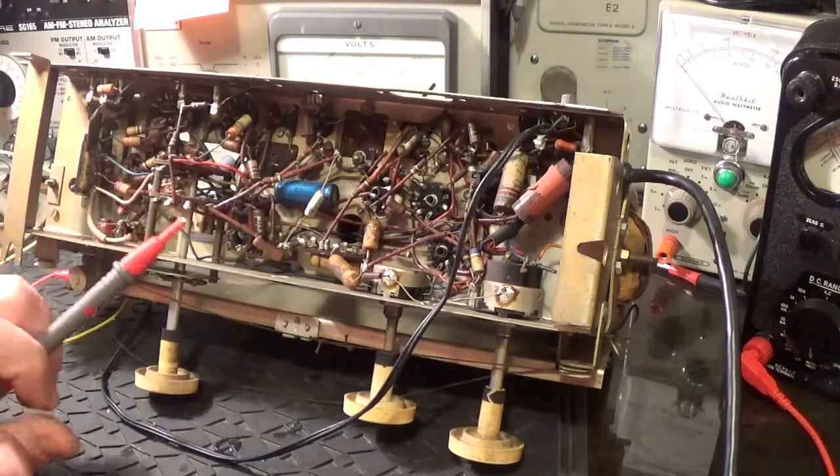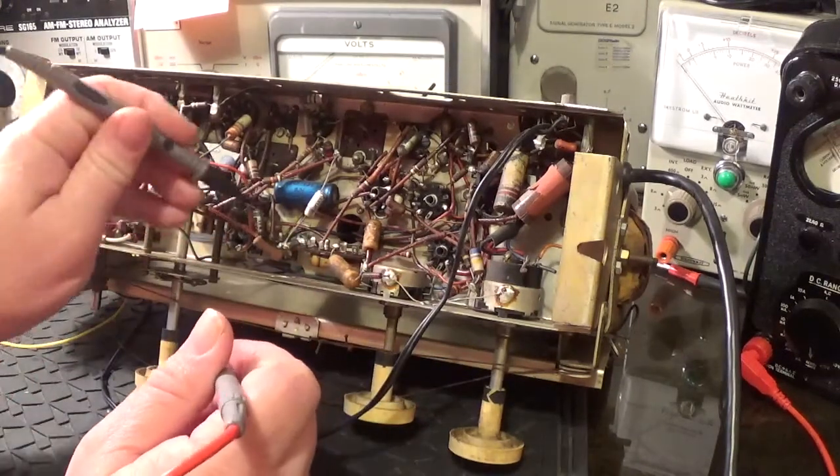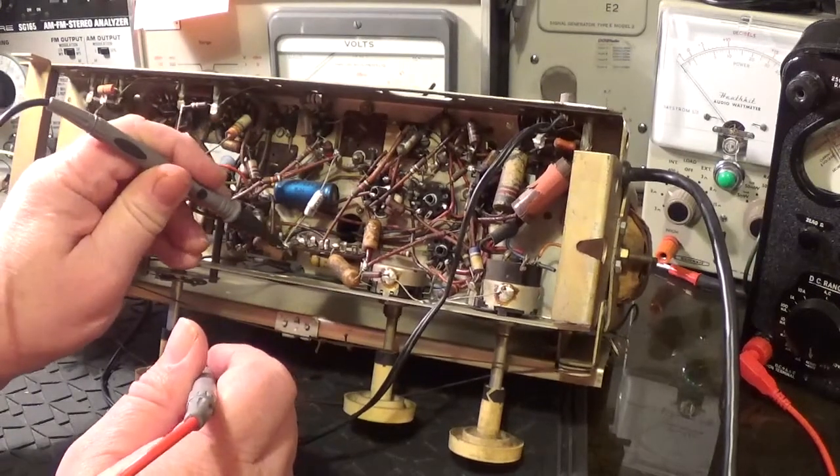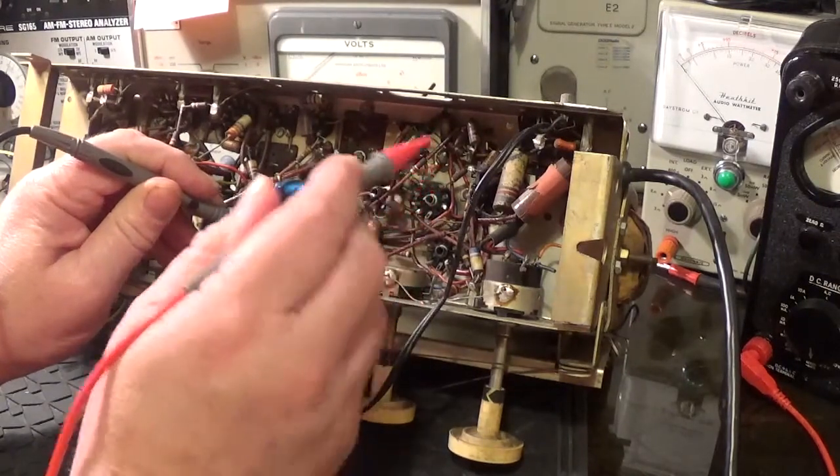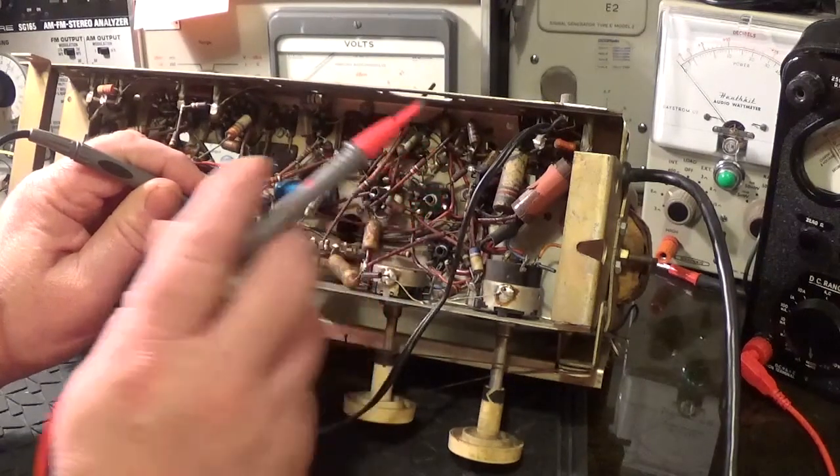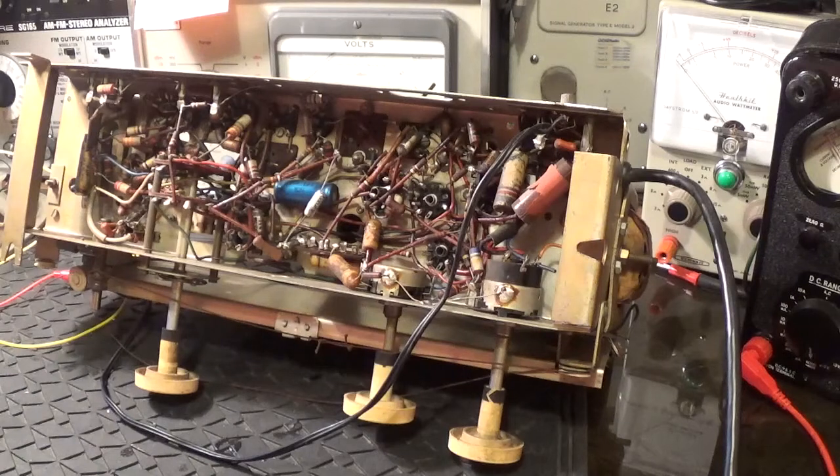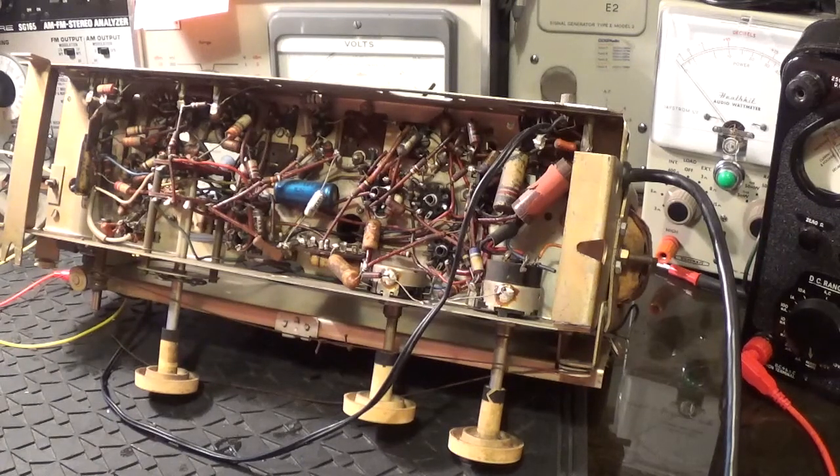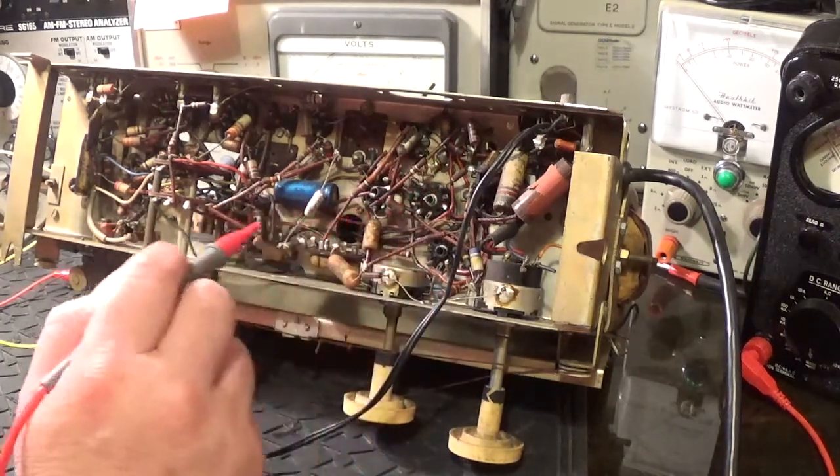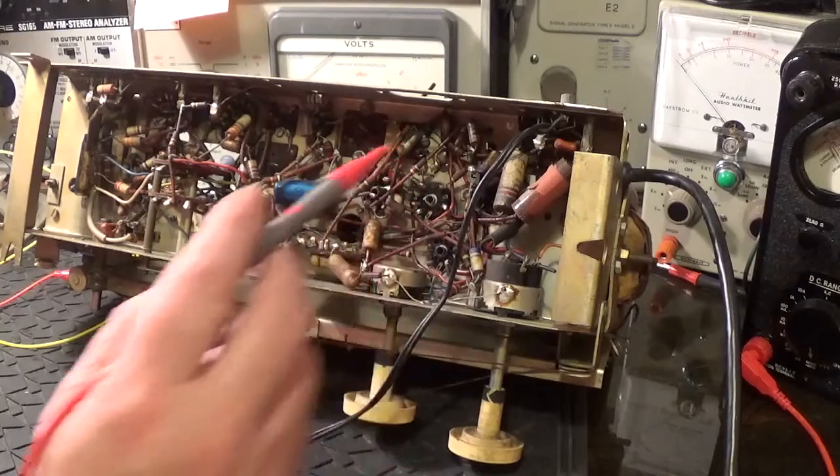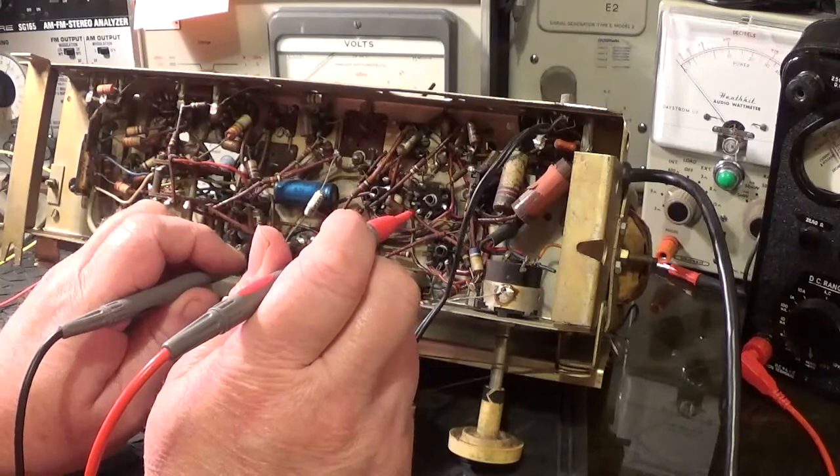I've got my avometer set on ohms. I'm going to find a convenient earth place here and what I'm going to do is just touch one of the valve connections. I'm looking for the anode of the output valve. And I'm going to listen for a rustling noise in the speaker and that should mean at least it's sort of working.